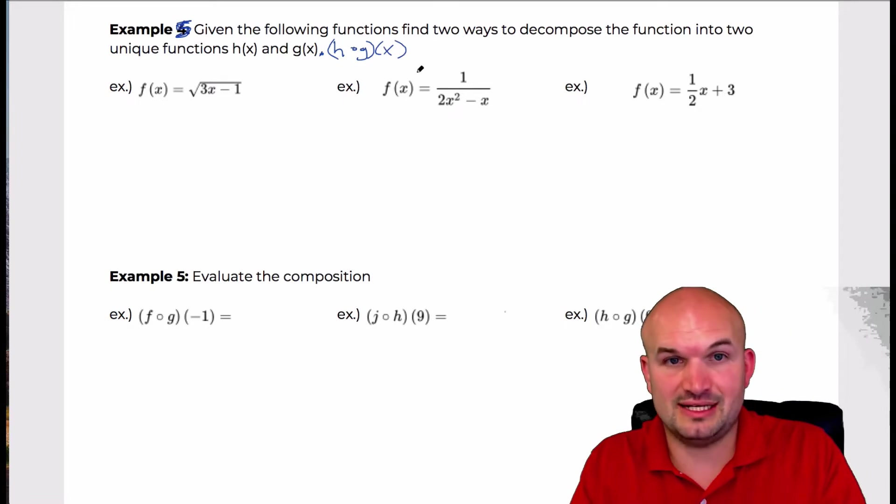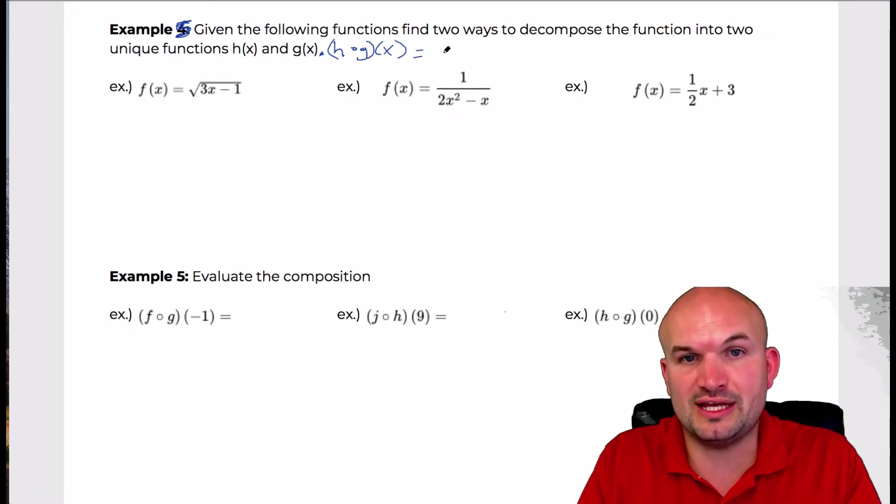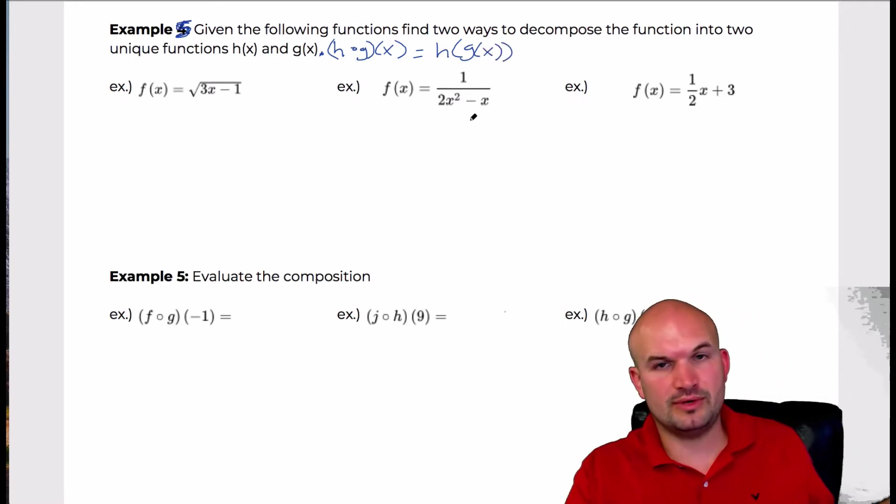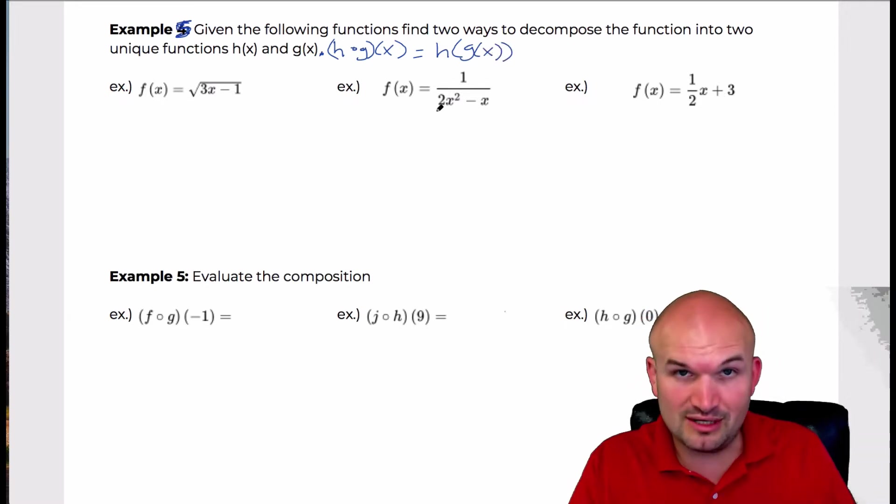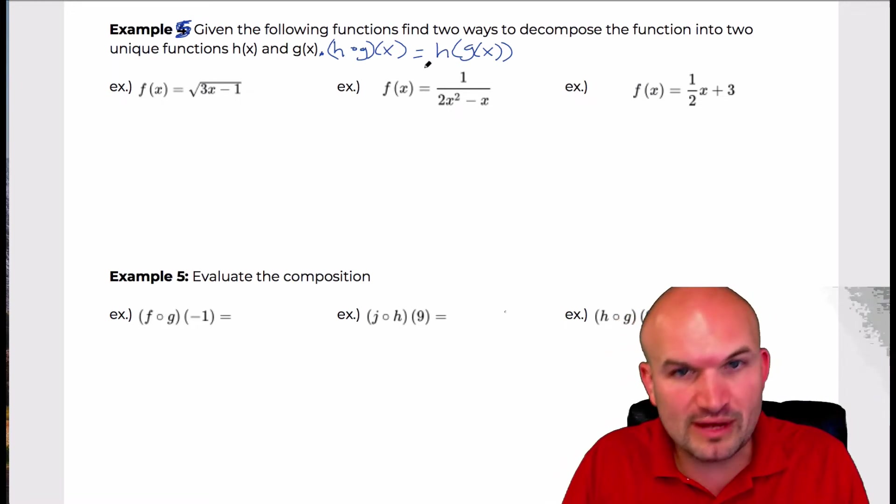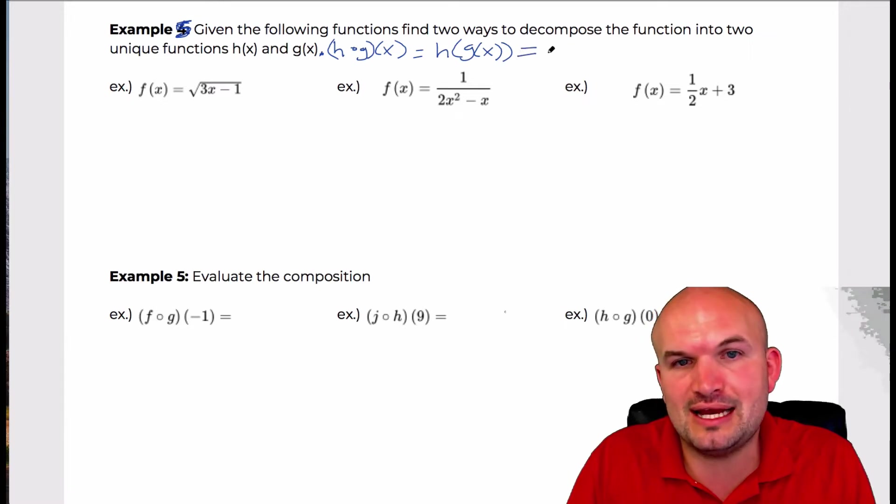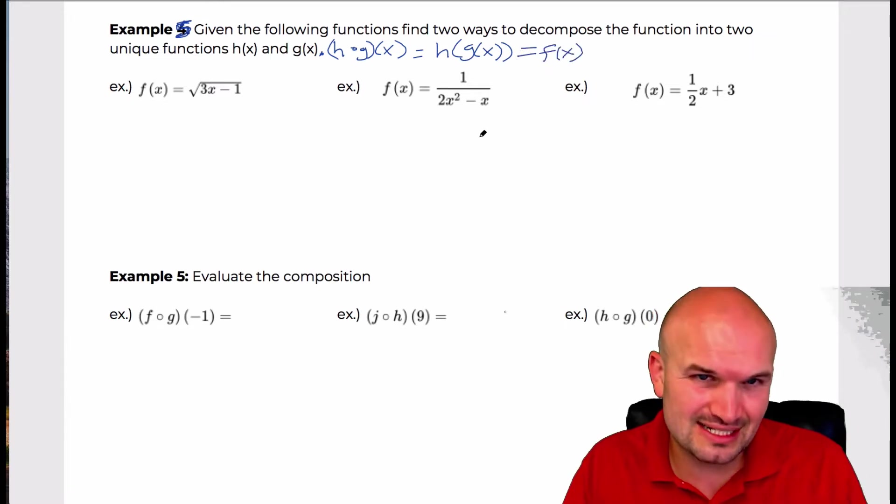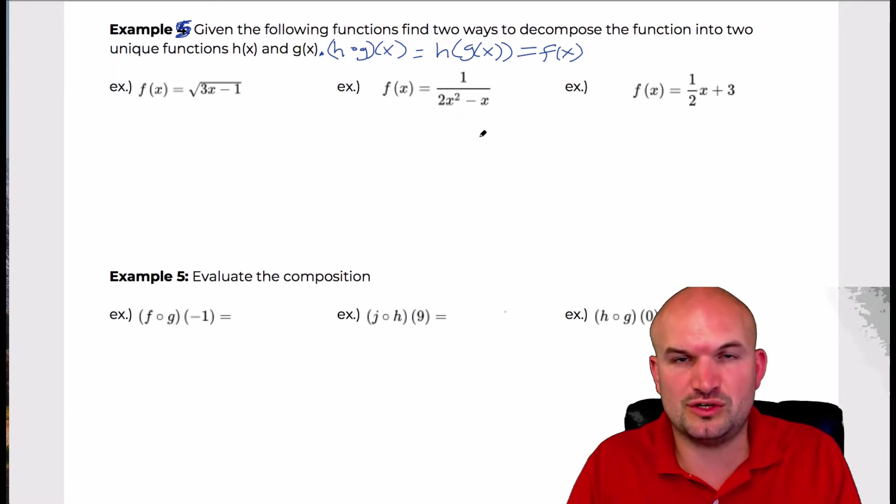So basically what I'm asking is, how can we rewrite this where we plug in the g function into the h of x function? And you might say, well, we don't have a g of x or an h of x. You're right, so we need to create a g of x or an h of x, where when we apply h of g of x, we end up getting f of x. So that's exactly what this question is asking.